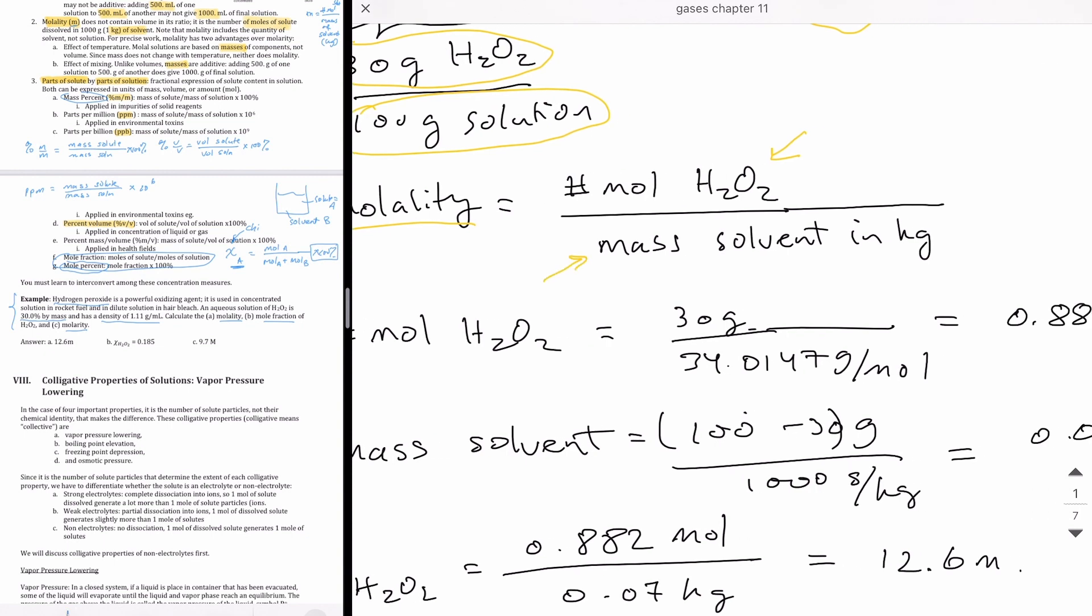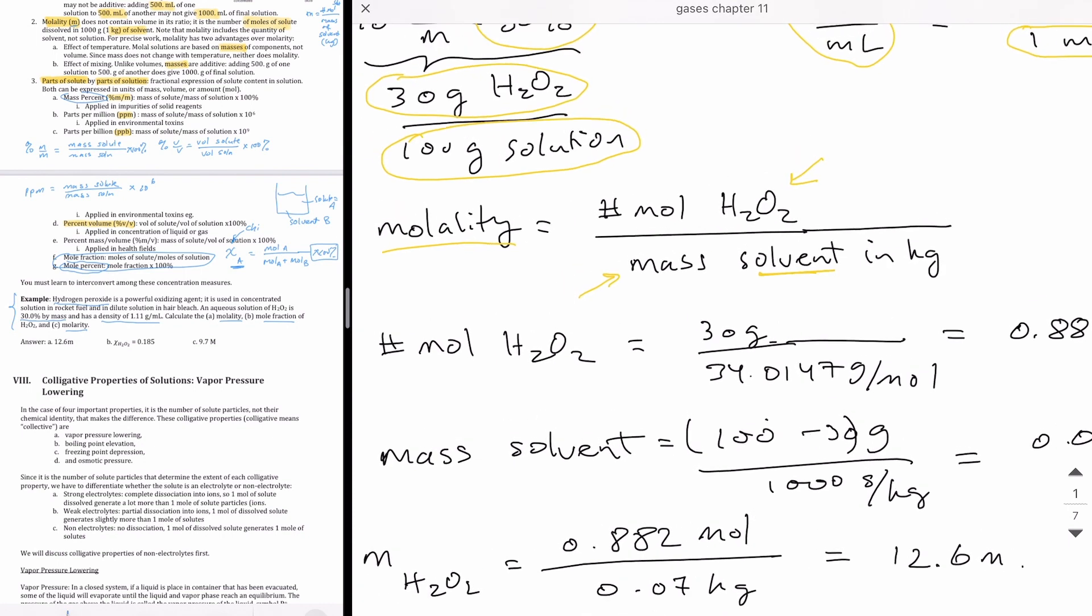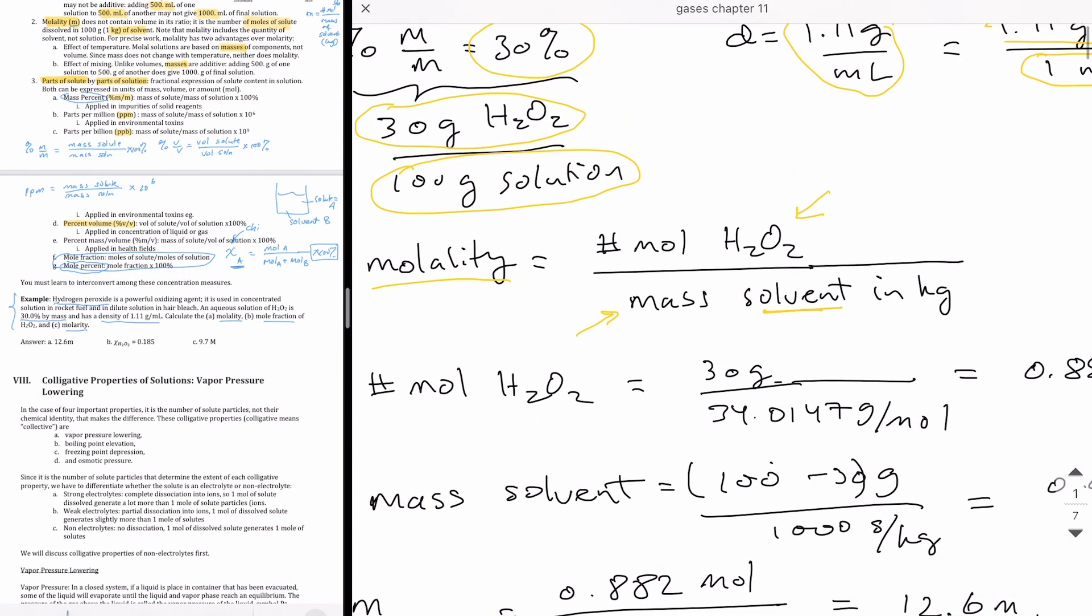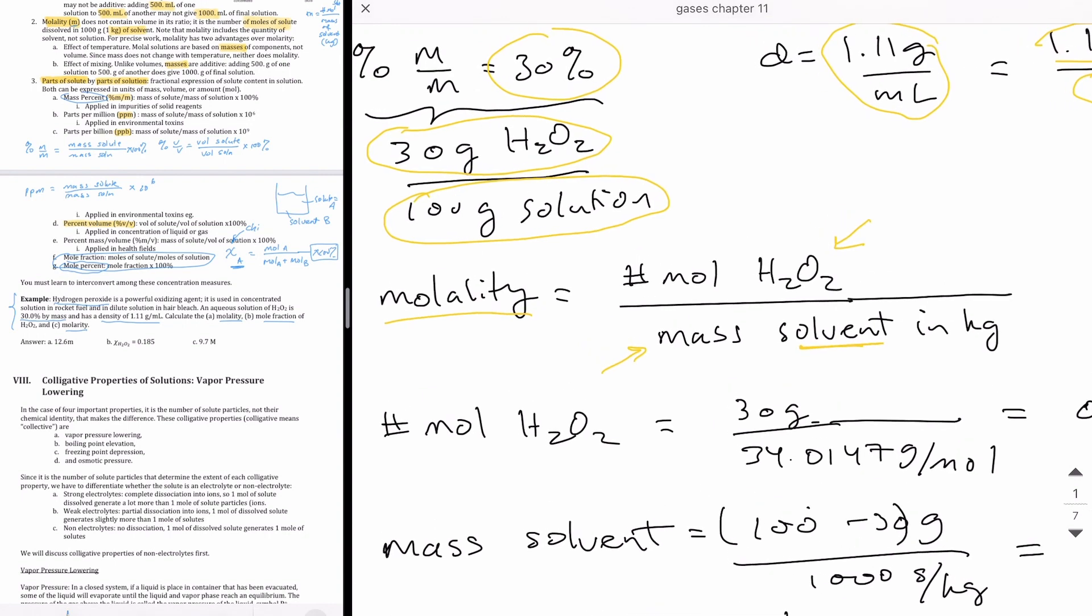and then the mass of just the solvent in kilograms. So we're going to need those two numbers. So first let's calculate number of moles of H2O2. Well, we know that from the mass percent information that there's 30 grams of H2O2 in a hundred grams of solution.